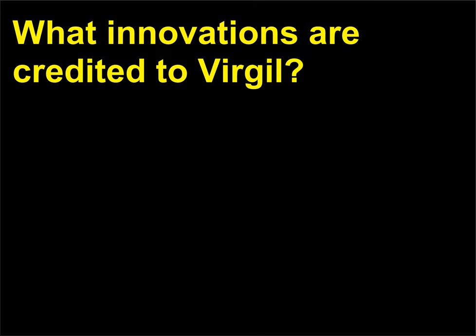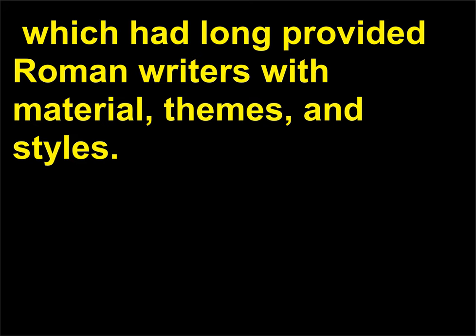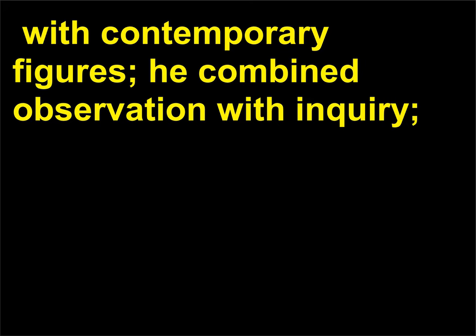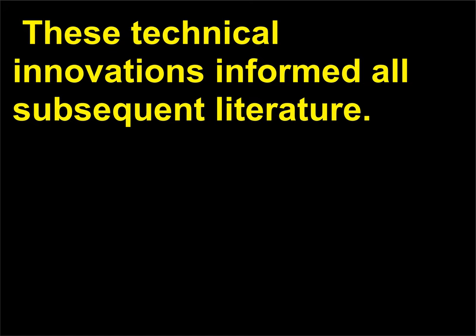What innovations are credited to Virgil? Scholars acclaim Virgil, 70–19 BC, for transforming the Greek literary traditions which had long provided Roman writers with material, themes, and styles. Virgil populated his pastoral settings, always idealized by other writers, with contemporary figures; he combined observation with inquiry, employed a more complex syntax than had been in use previously, and developed realistic characters. These technical innovations informed all subsequent literature.